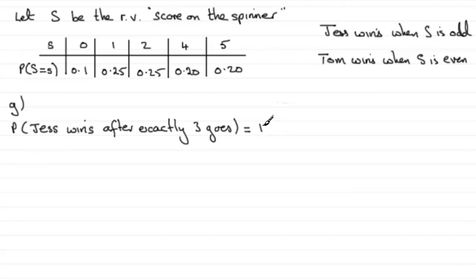So what could we get then? Well, the spinner could spin a five first of all. It's got to be an odd number.